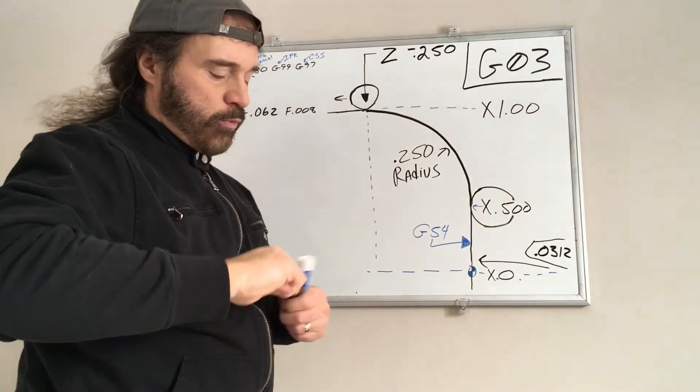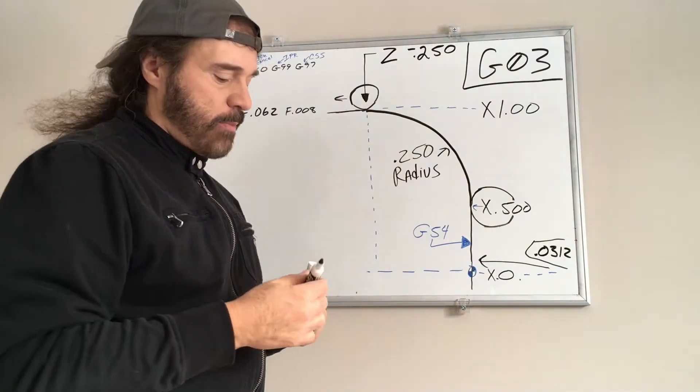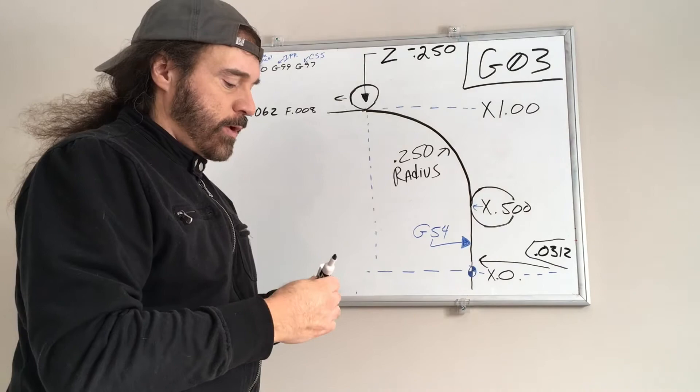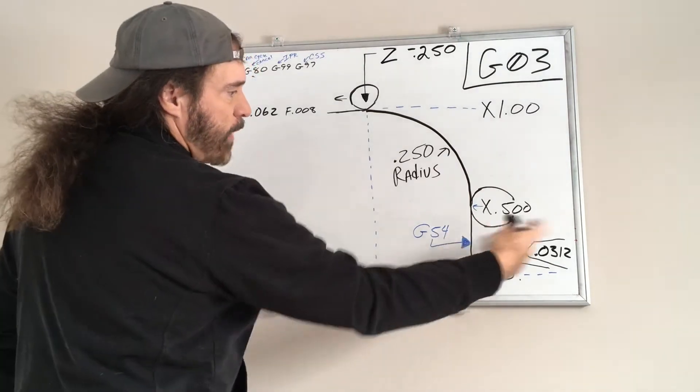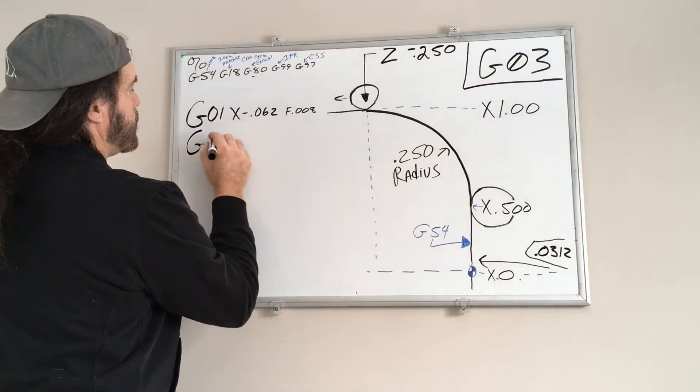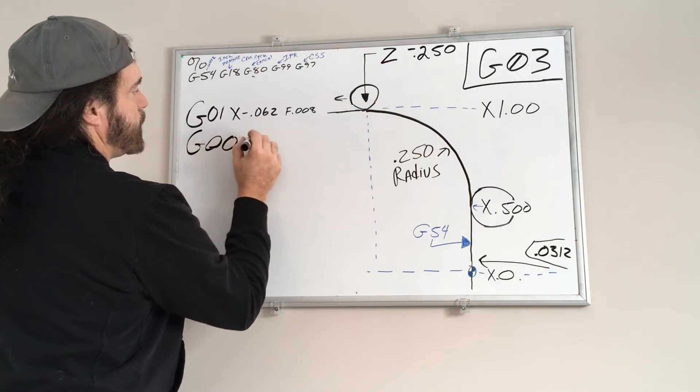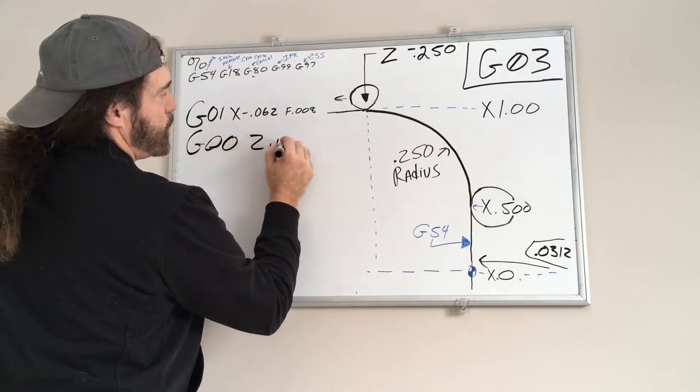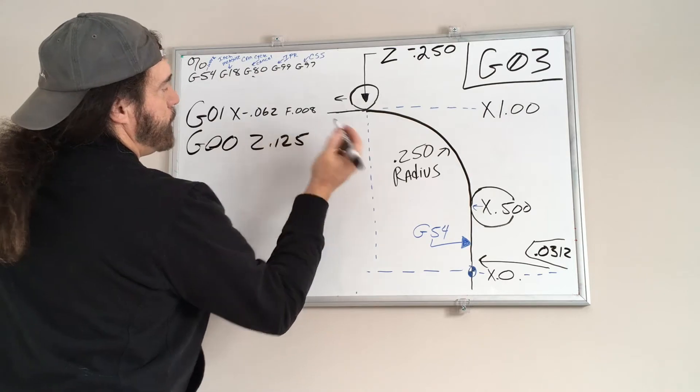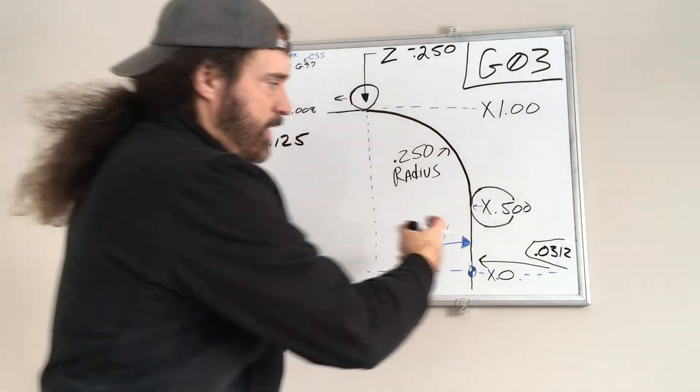Now, writing with cutter comp, there's really not a whole lot to it. So I'm going to wrap it out. We're going to do a G01, Z 0.125 just to get the cutter away.